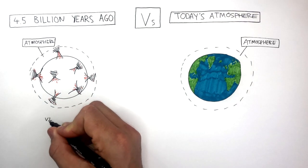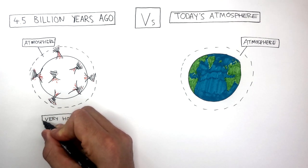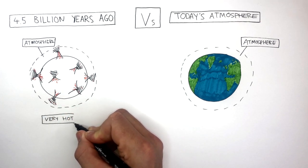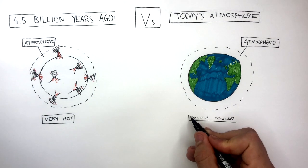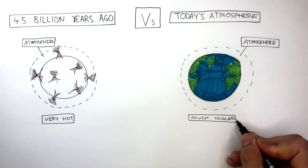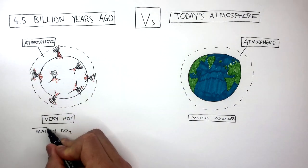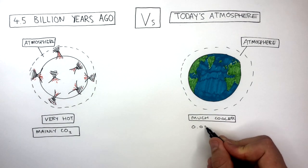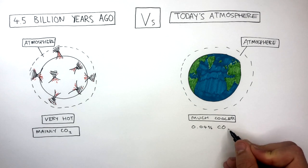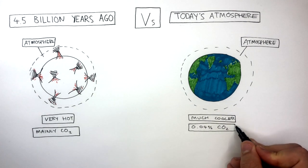It was very hot 4.5 billion years ago due to the large amounts of volcanic activity, whereas it is much cooler in today's atmosphere as there is a lot less volcanic activity. There was mainly carbon dioxide present in Earth's early atmosphere, whereas in today's atmosphere there is 0.04% carbon dioxide. This is a very big change due to several reasons.